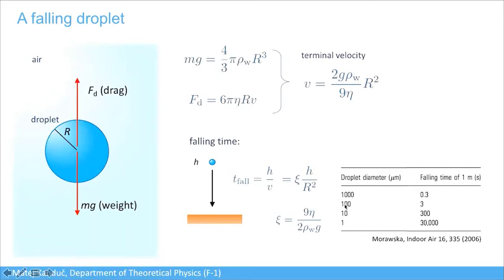For a 10-micron droplet, falling takes about 5 minutes, and for a 1-micron droplet it amounts to approximately 8 hours. This all assumes the droplet falls as a rigid body without evaporating, and that the atmosphere is completely undisturbed—which may not be the case, as we will see next.